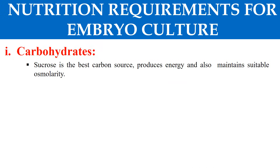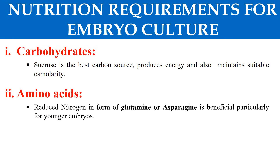What are the nutritional requirements for embryo culture? Embryo cultures require some special conditions. First, carbohydrates — they require carbohydrates as an energy and carbon source; sucrose is generally the best carbohydrate. Second, amino acids should be present in the media as a nitrogen source — glutamine and asparagine are very important as sources of reduced nitrogen. Casein hydrolysate, an amino acid complex, also provides essential nutrients.